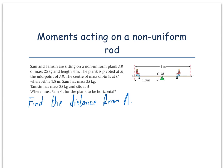Moments acting on a non-uniform rod. Sam and Tanzim are sitting on a non-uniform plank AB of mass 25 kg and length 4 m. The plank is pivoted at M, the midpoint of AB.